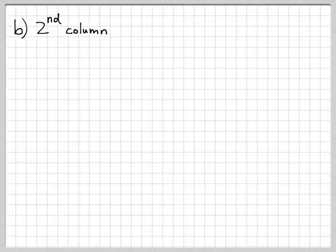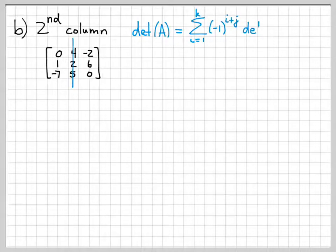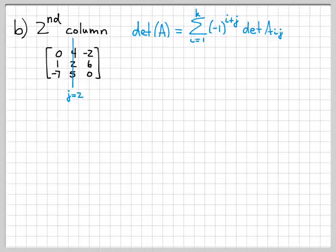Now let's compute the determinant by cofactor expansion about the second column. Starting with the matrix, I put a line down the second column. The same equation applies, writing the determinant as a weighted combination of submatrix determinants. This time j equals 2 is fixed, and I loop over each row.